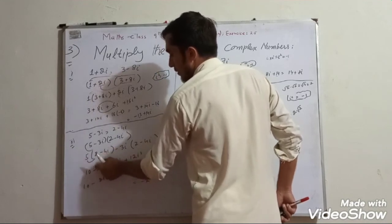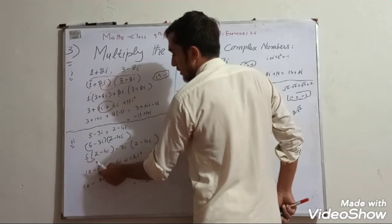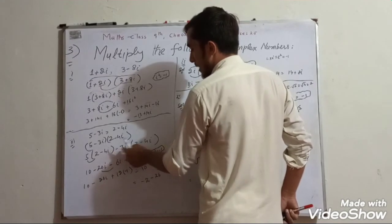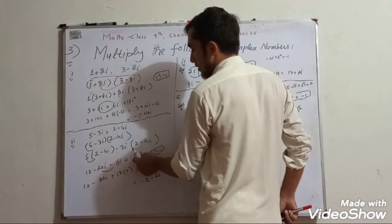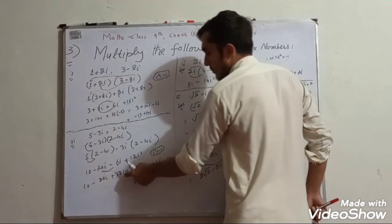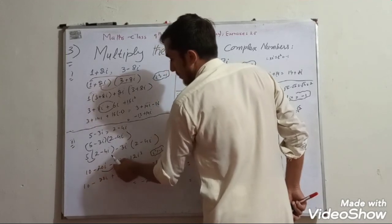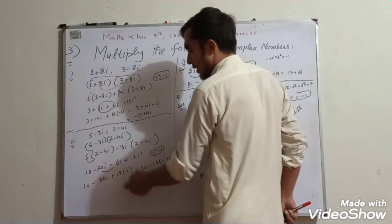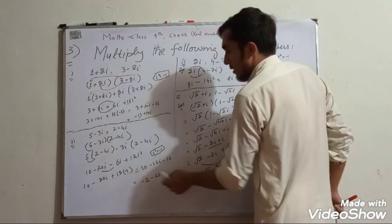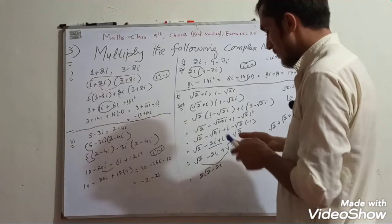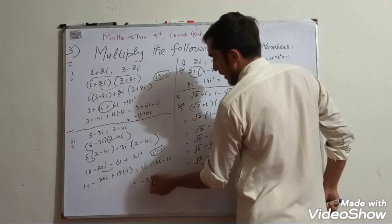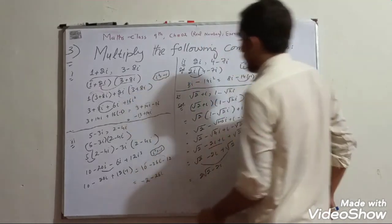Plus minus 4 iota times 4 is 20 iota squared. Combined iota terms and iota squared terms using iota squared equals minus 1: result is 10 minus 12 equals minus 2, and the iota part is minus 26 iota.